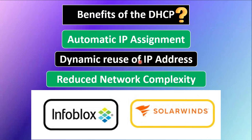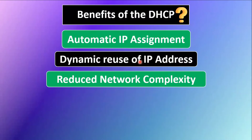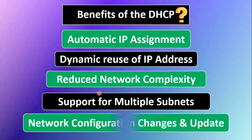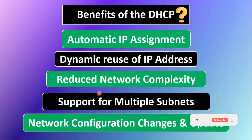Third is reduced network complexity. DHCP simplifies network administration — using tools like Infoblox or SolarWinds, we can manage tasks and clients for a large number of clients. DHCP can work with network routers to assign IP addresses across multiple subnets. Network configuration changes such as changing the IP address, DNS server, or subnets can be done centrally on the DHCP server without needing individual configuration on each client.